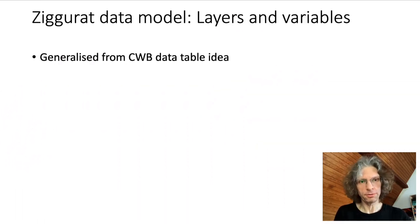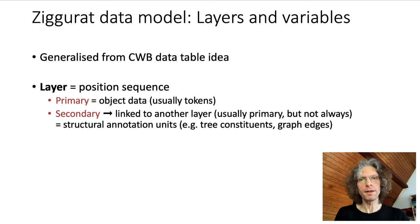A Ziggurat data store consists of multiple layers. Each of these layers corresponds to the rows of an annotation table. The primary layer holds the actual object data, usually a sequence of tokens. Secondary layers create structures, such as segmentations, trees or graphs over this primary layer, or over another secondary layer.